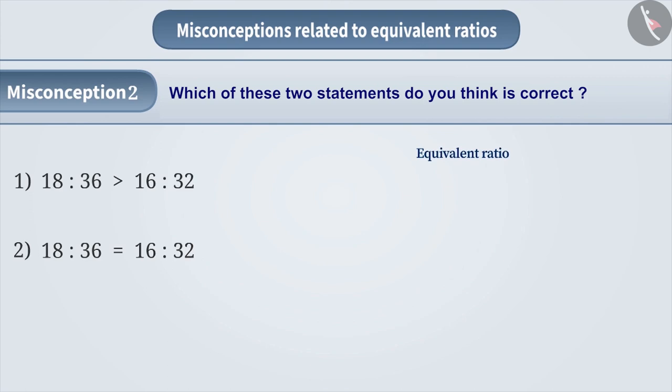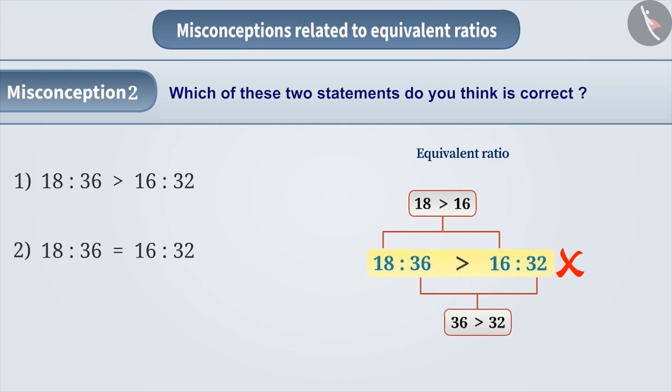It is wrong to think that since 18 is greater than 16 and 36 is greater than 32, 18 is to 36 is greater than 16 is to 32. Comparing two ratios in this way is incorrect. Hence, option 1 is incorrect.